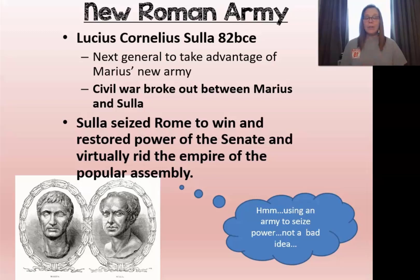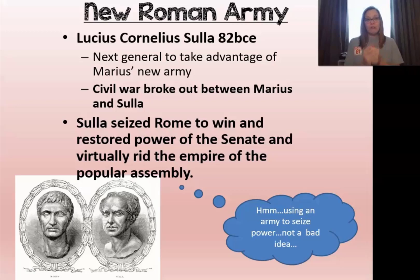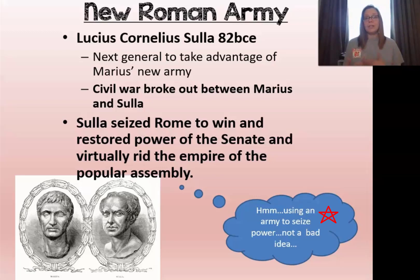A power struggle begins. Another leader named Lucius Cornelius Sulla comes along in 82 BCE and takes advantage of Marius's new army. Sulla and Marius start fighting over the army because they realize that having control of the army is going to be extremely politically important. Sulla takes over Rome to win and restore power to the Senate, basically trying to get rid of the popular assembly — using the army to seize power. This is something that becomes a very common way to seize power in a country that is in a state of change and flux.